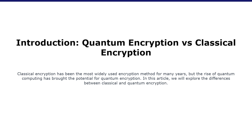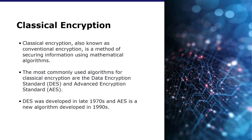In this video, we're going to explore the differences between classical and quantum encryption. Classical encryption, also known as conventional encryption, is the method of securing information using mathematical algorithms that scramble the original message into an unreadable form. The sender encrypts the message and the receiver decrypts it using a shared key. The most commonly used algorithms are the Data Encryption Standard and the Advanced Encryption Standard. Classical encryption is widely used today for data security, online banking, e-commerce, and communication between individuals and organizations.